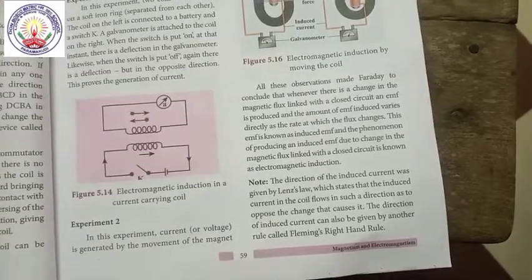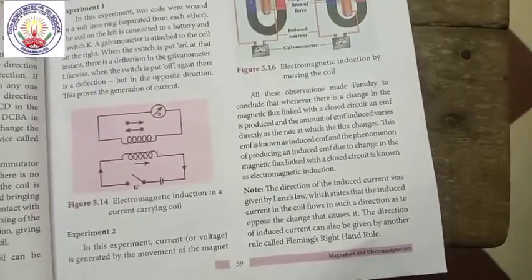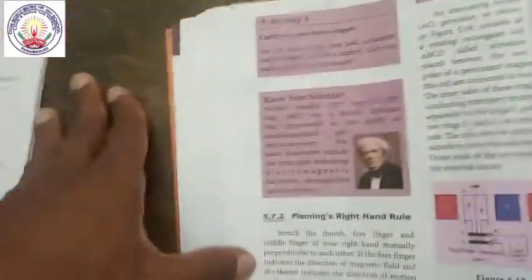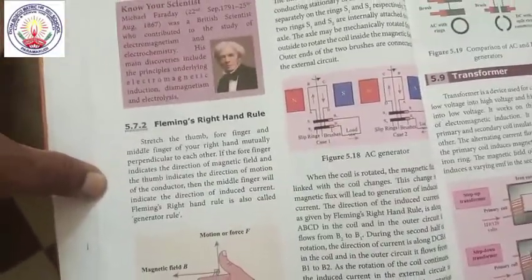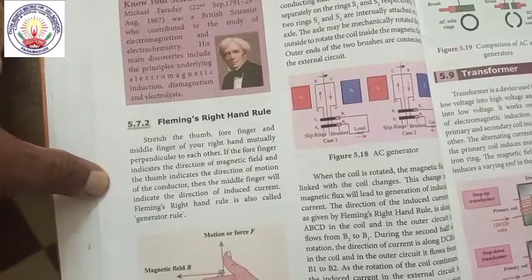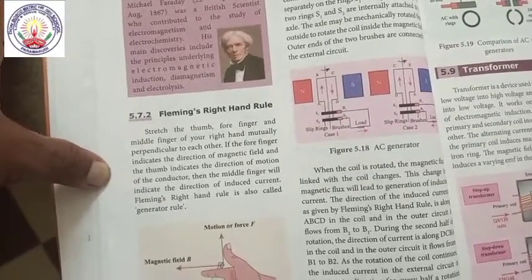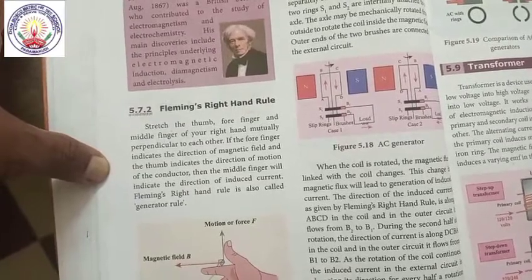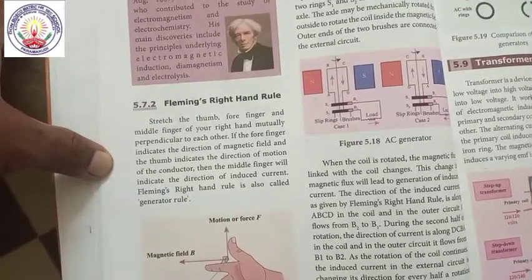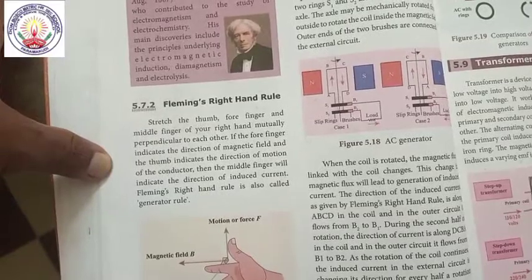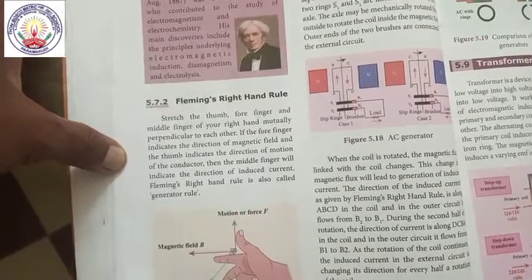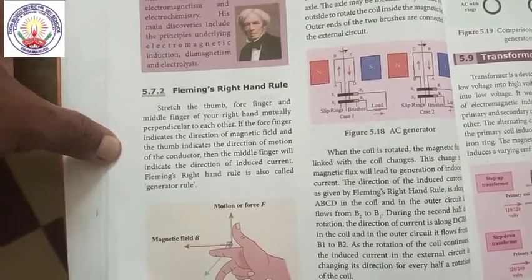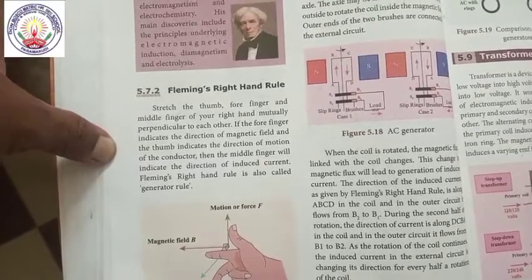The direction of the induced current can also be given by Fleming's Right-Hand Rule, which is also called the Generator Rule.